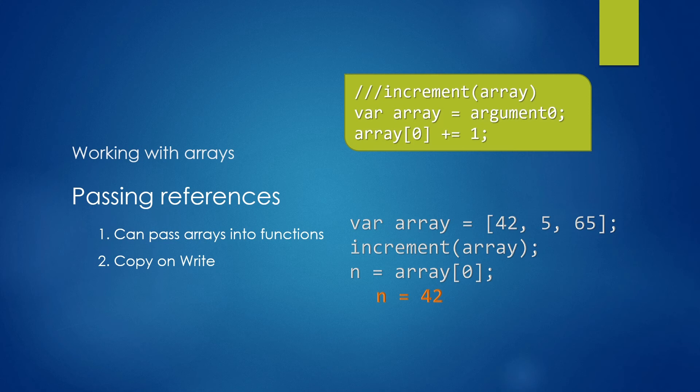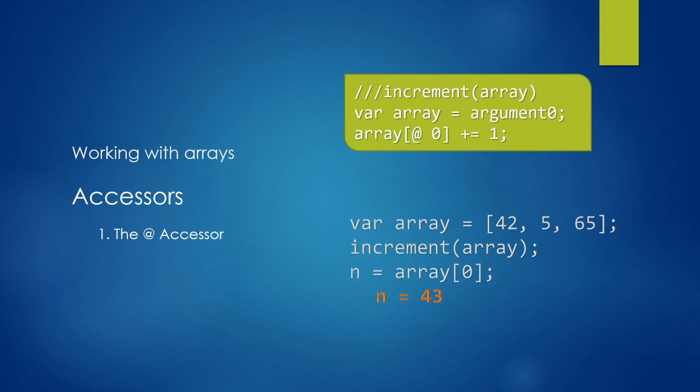And then your reference is formed just for that script. So you may wonder how you remedy that. And that is by using accessors. So here we have the @ accessor or the array accessor, which is the little @ symbol. So if we have a look at our new modified increment script, we now have the @ symbol inside the square brackets.